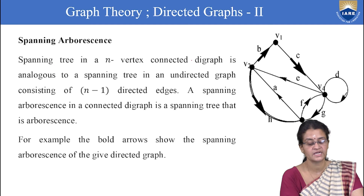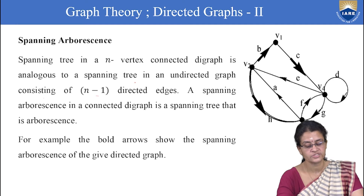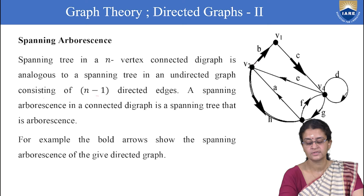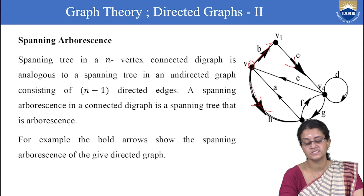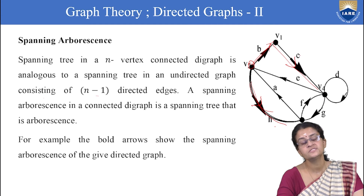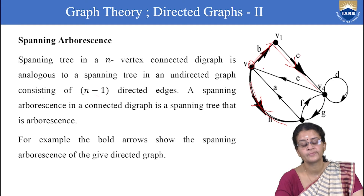Now we will see what is a spanning arborescence. A spanning arborescence is an arborescence which contains all the vertices of the given graph — analogous to a spanning tree. A spanning tree in an n-vertex connected digraph consists of n-1 directed edges. A spanning arborescence in a connected digraph is a spanning tree that is also an arborescence, with one vertex of in-degree 0.